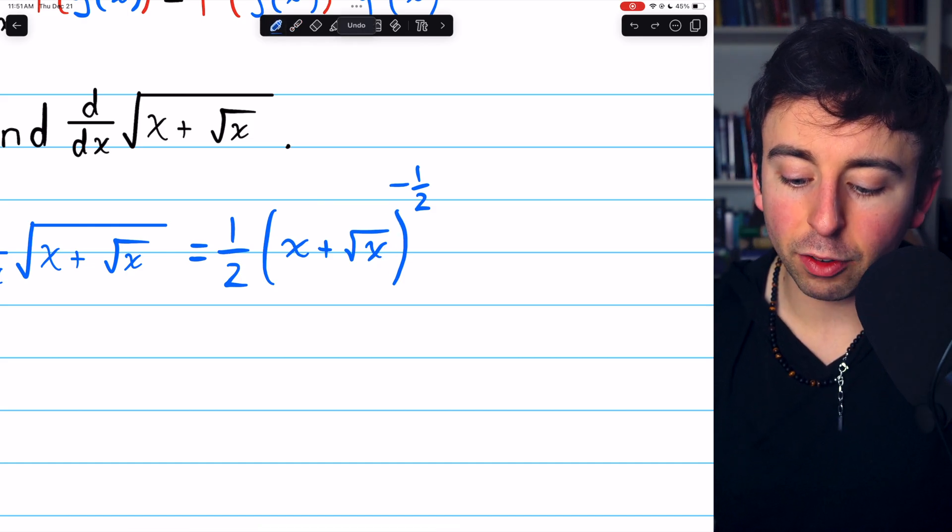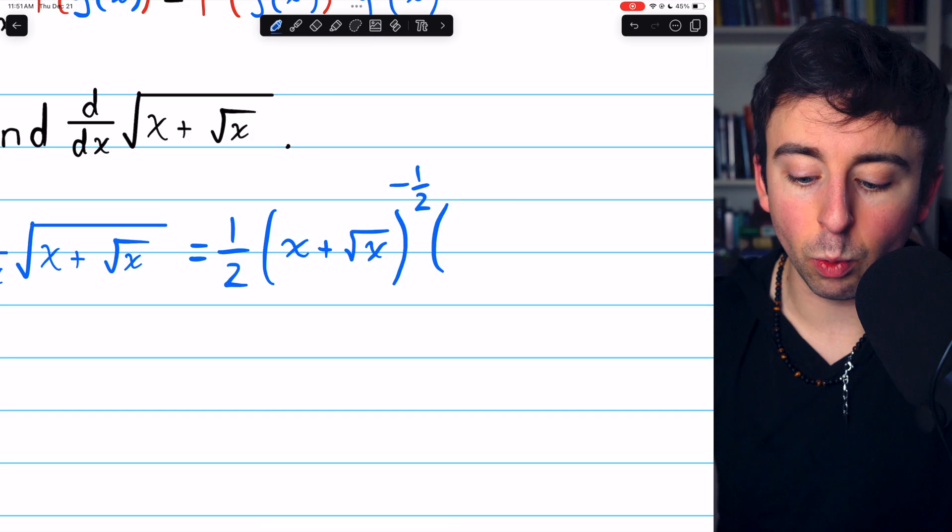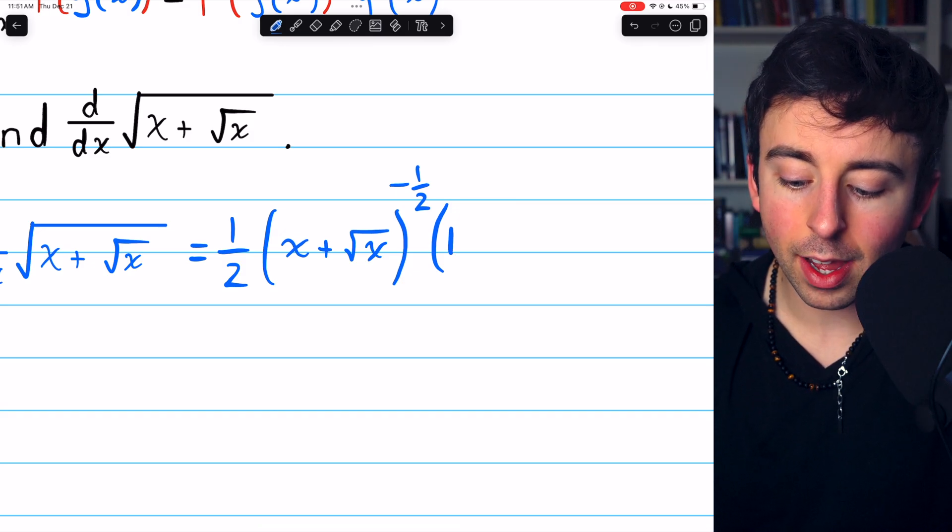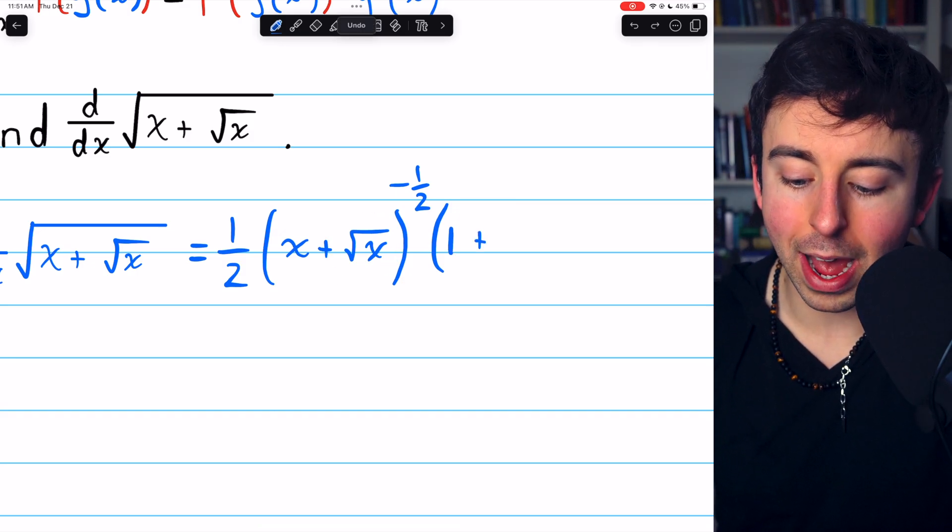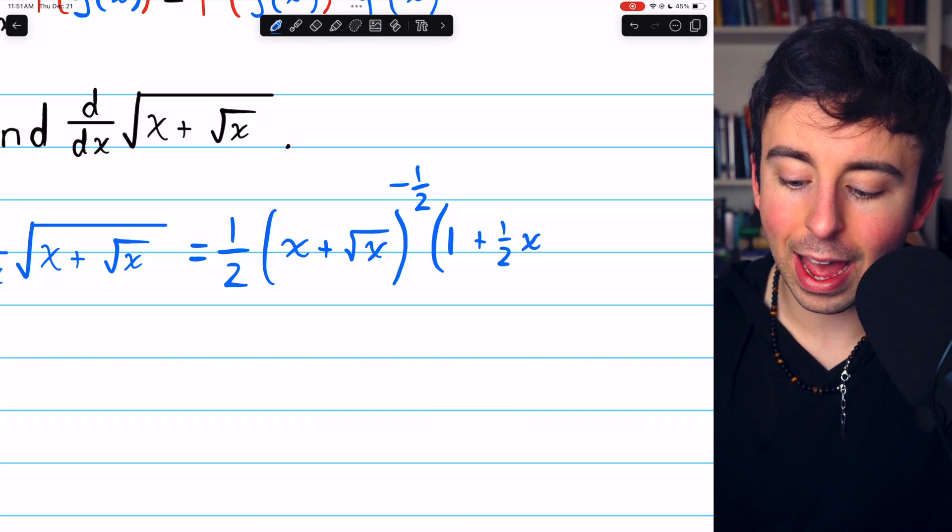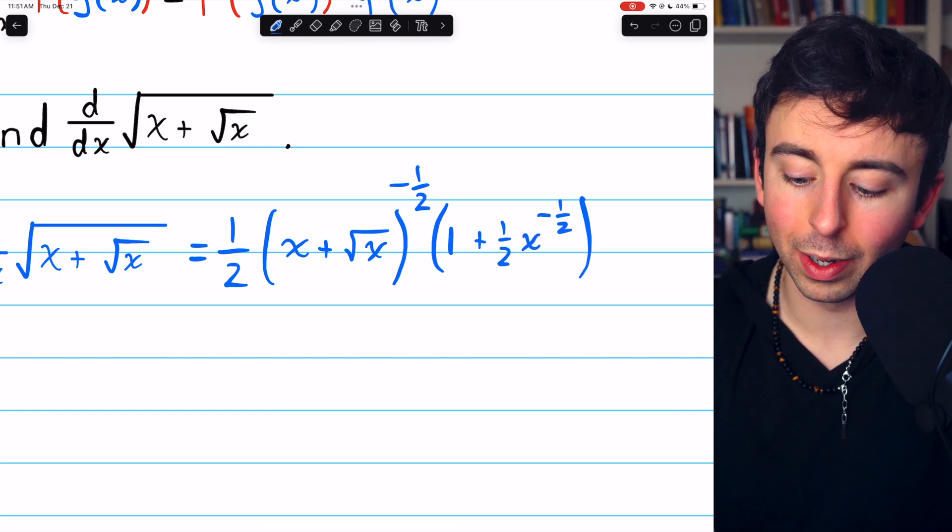The derivative of x plus root x is pretty straightforward. We just take the derivative of x, which is one, and then the derivative of root x, which is just one half x to the negative half. Again, that's power rule once again.